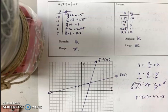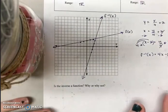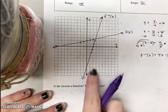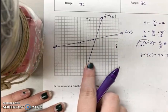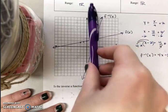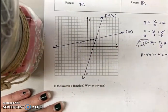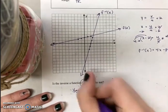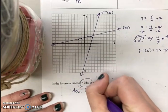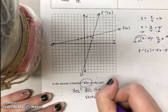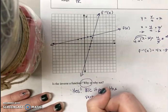All that's left is to determine: is the inverse a function, and why or why not? Here's my inverse function. I need to see if it passes the vertical line test. As I draw any vertical line, it will only pass through the inverse function at one point. The answer is yes — it passes the vertical line test, so it is a function.